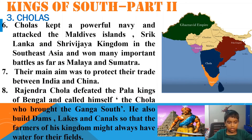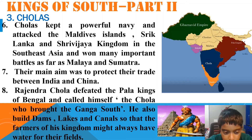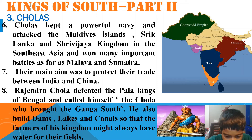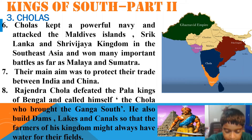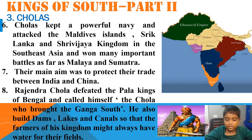Rajendra Chola defeated the Pala king of Bengal and called himself the Chola who brought the Ganga south. He also built dams, lakes, and canals so that the farmers of his kingdom might always have water for their fields.